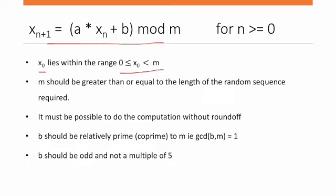And m should be greater than or equal to the length of the random sequence required. Whatever sequence length you need, m should be greater than that. And there should not be any round-off after the computation when calculating mod m.